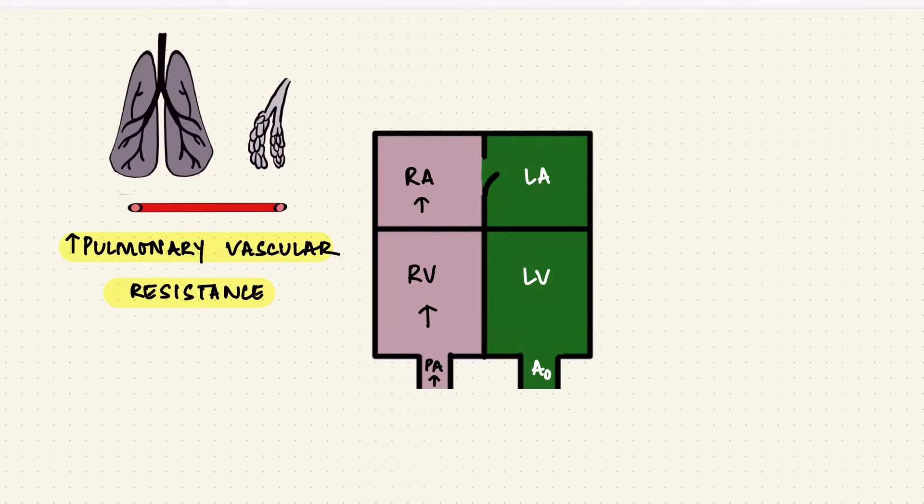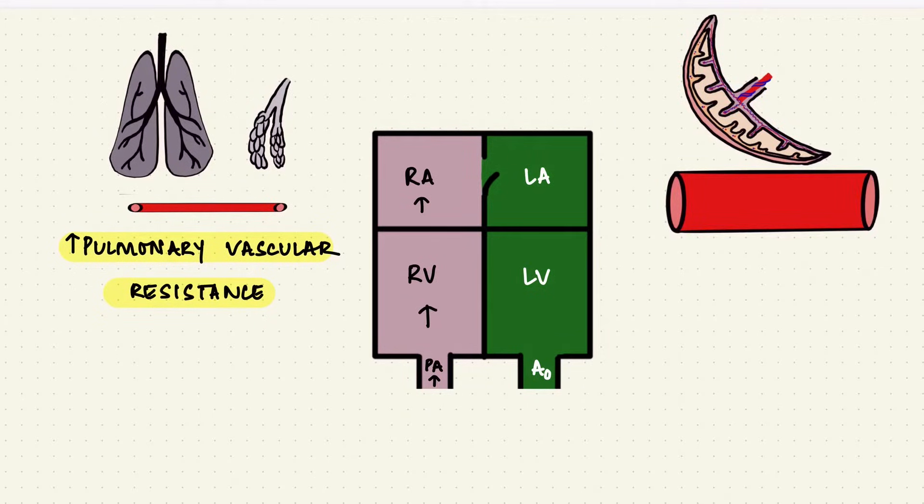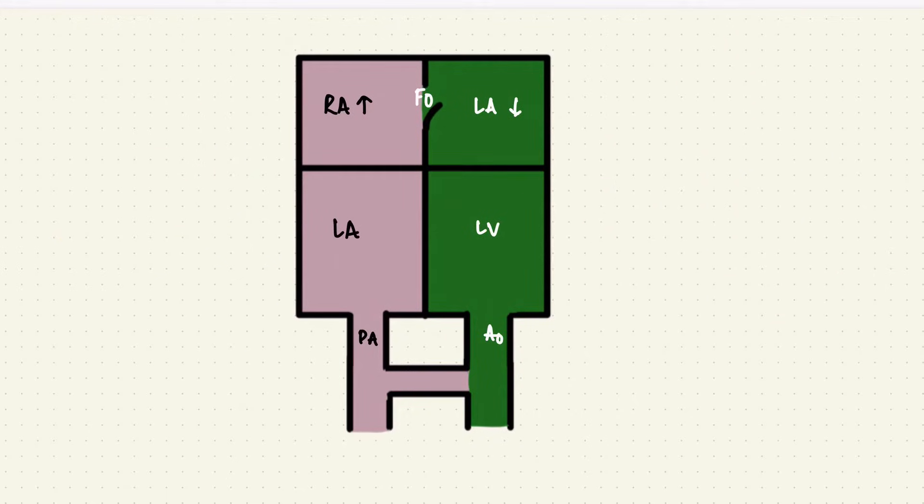The placenta on the other hand has large vessels. So the vascular resistance in systemic circulation is low. Because of the low systemic vascular resistance, there's a low aortic pressure, a low left atrial and left ventricular pressure. So since the right atrial pressure is higher than the left atrium, blood flows through the foramen ovale from the right atrium to the left.